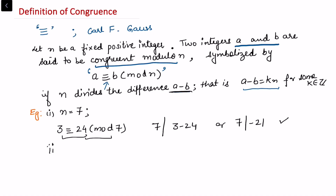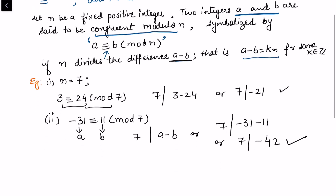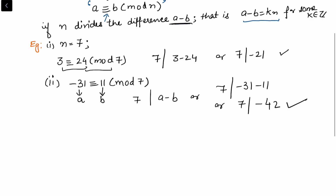Take another example: is minus 31 congruent to 11 modulo 7? Here a is minus 31 and b is 11, so we need 7 to divide a minus b, which is minus 31 minus 11, or minus 42. Since 7 divides 42, this is also true, so minus 31 ≡ 11 (mod 7).